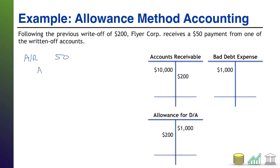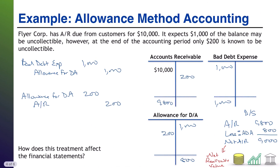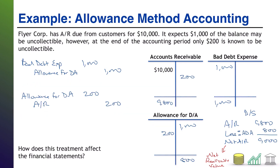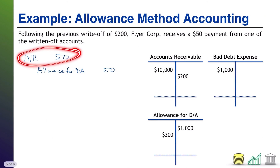...credit allowance for doubtful accounts $50. Why credit allowance? This goes back to what our write-off looked like — we no longer needed the AR and we no longer needed the estimate. Now that we're putting the AR back, we have to also put that estimate back. Updating the ledgers: the $50 goes back into AR and back into the allowance. The allowance was $800 and now it's back up to $850.